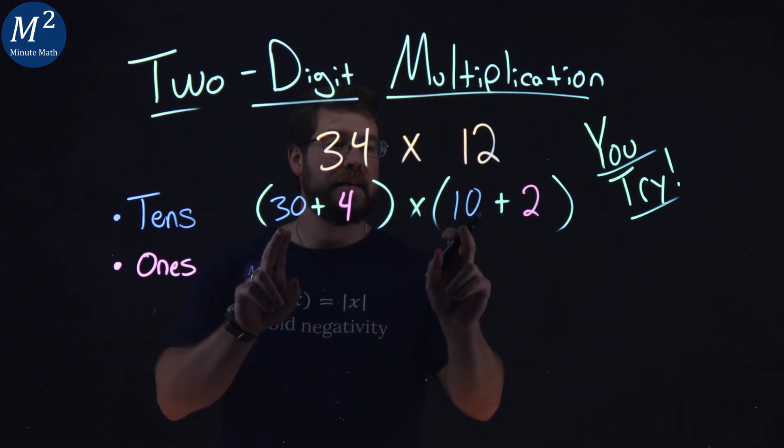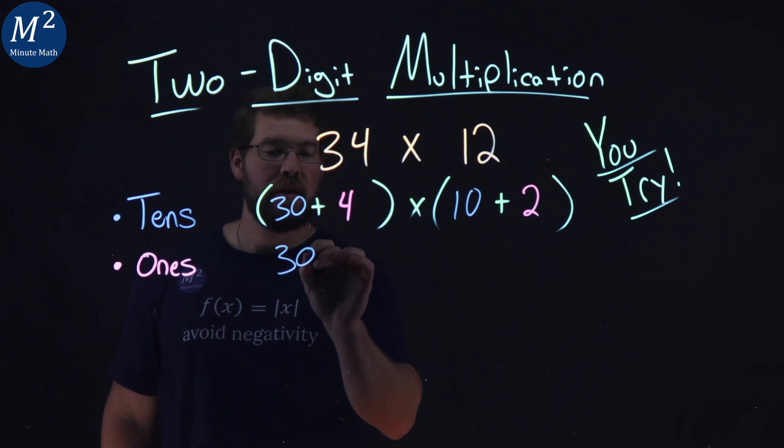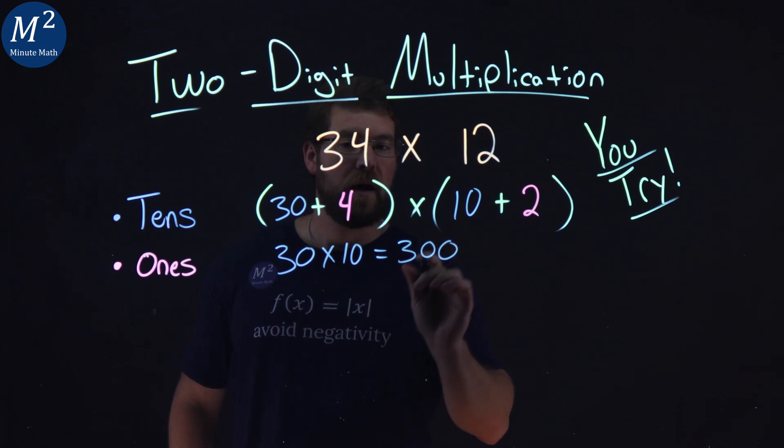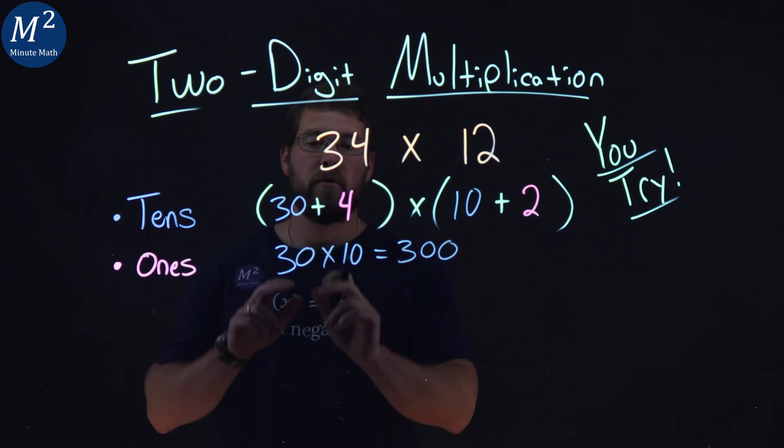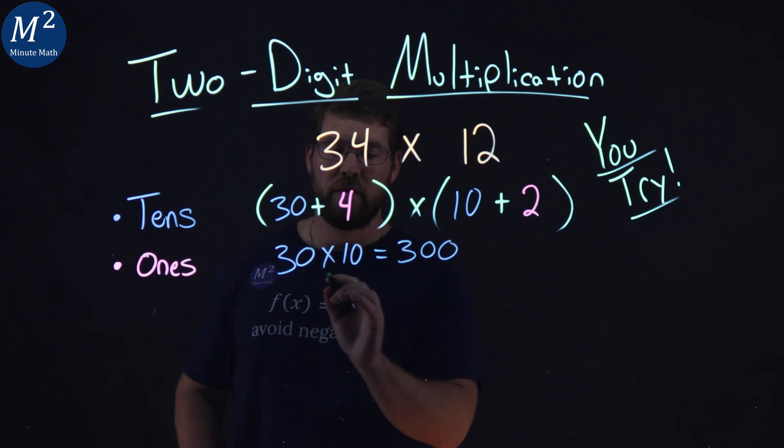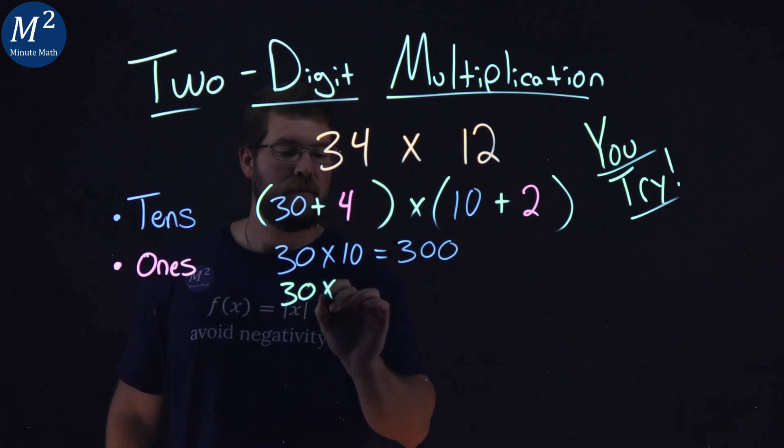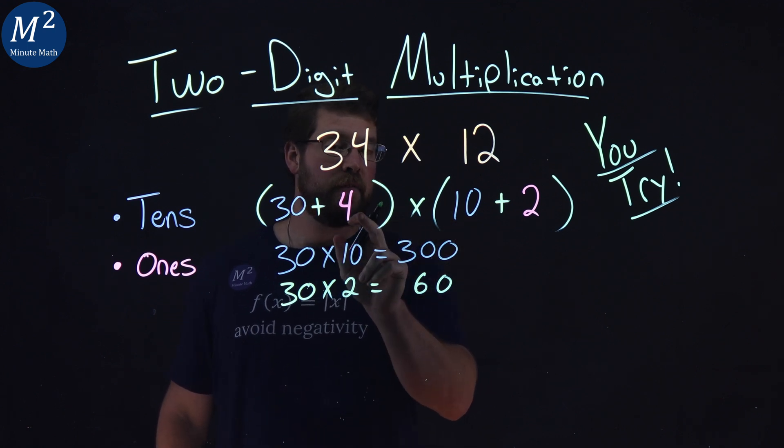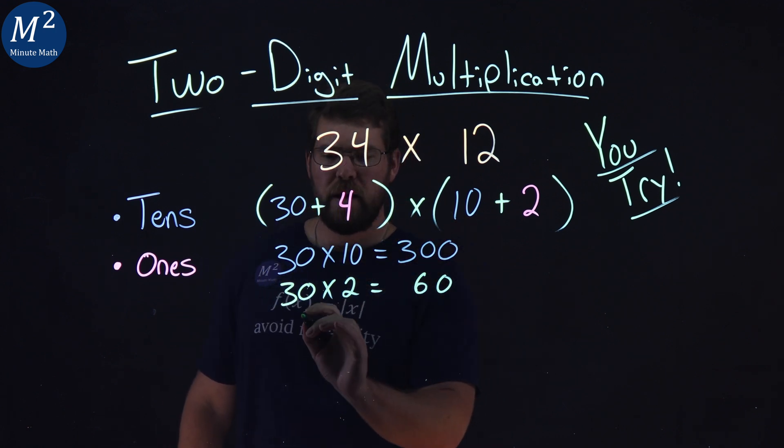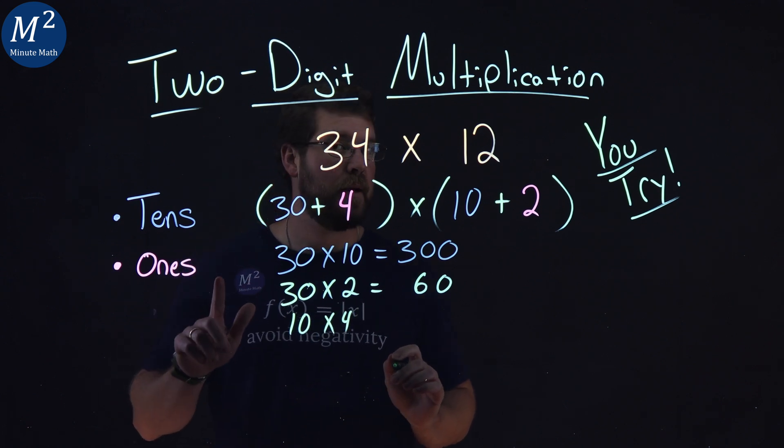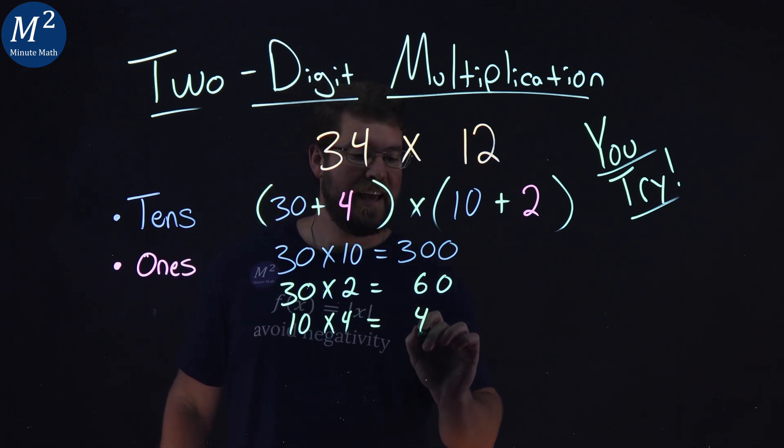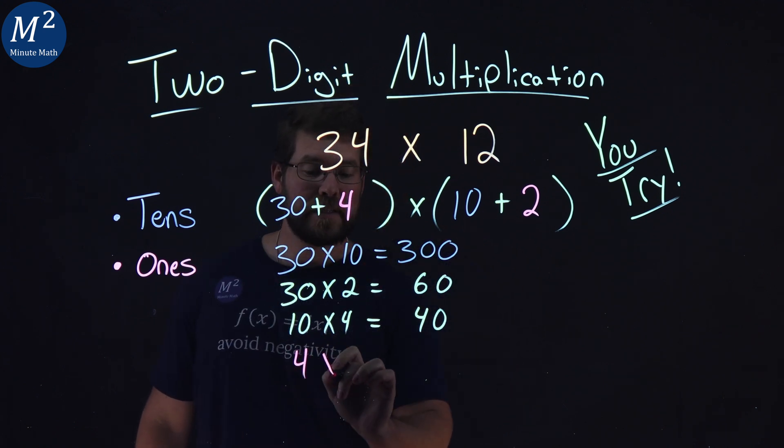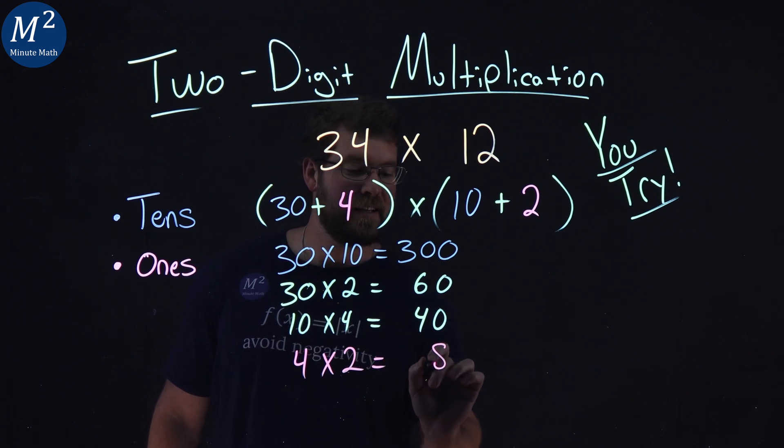Now, let's multiply the tens place together. We have 30 times 10, and 30 times 10 is 300. Let's multiply the 30 times 2, that ones there. So, 30 times 2, which is 60. We're going to take the 10 times the 4, or 4 times 10 there. 10 times the 4, the tens place times the ones place, which is 40. And lastly, we multiply the ones place, and that's the 4 times 2, which is 8.